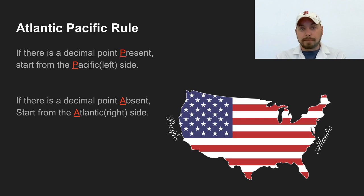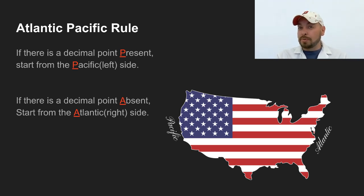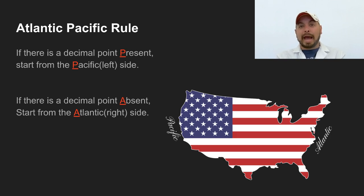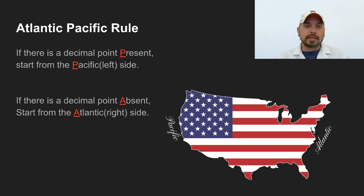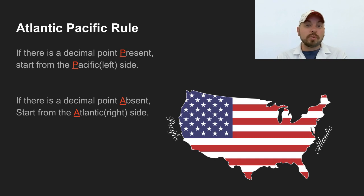To repeat: with the Pacific side, if the decimal point is present, you start on the left side, eliminate all zeros up until the first non-zero number, and then any number — including that one — to its right is going to be significant. If a decimal point is absent, you start on the Atlantic side, eliminating all zeros on the right. You stop at the first non-zero number, and anything to its left is now going to be considered significant.